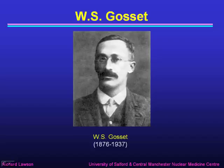The t-distribution was devised by W.S. Gossett, an English statistician. We've had a Swiss, a French, and a German statistician so far, so it's about time we had an Englishman. Gossett was born in Canterbury in 1876 and went to study mathematics and chemistry at Oxford University. He then worked for Guinness in their brewery in Dublin, where he applied statistical tests to select the best variety of barley for brewing Guinness.